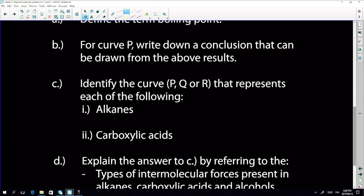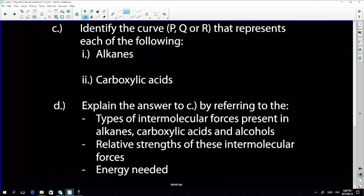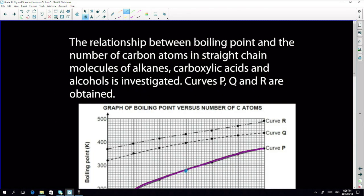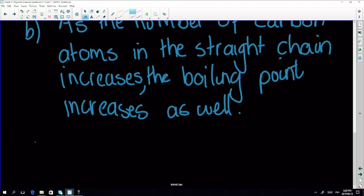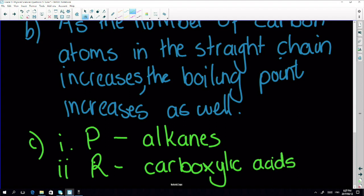Ah, identify the curve that represents each of the following, the alkanes and the carboxylic acids. Oh, wait, we've done that. P is the alkanes, R is the carboxylic acid, so we've done that. You wouldn't have to write in alkanes and carboxylic acid, you'd put P and R.